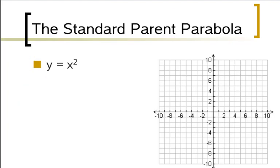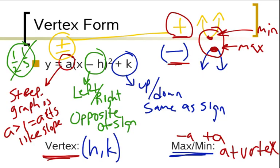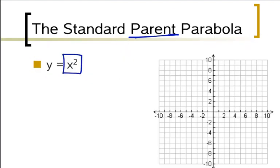So speaking of graphs, let's take a look at the standard parent parabola. Now the parent parabola is called the parent because it's the simplest one, it's the simplest form of this graph. Notice the equation has, there can be an a in here, there can be an h in here, there can be a k. So there's all sorts of things we can do to it. This is the most simple form of the graph.